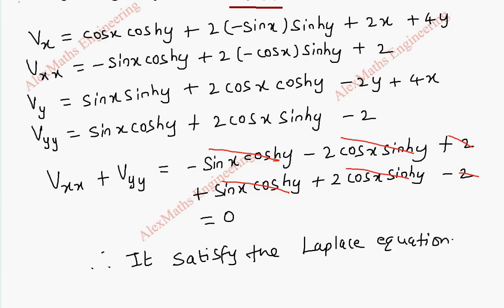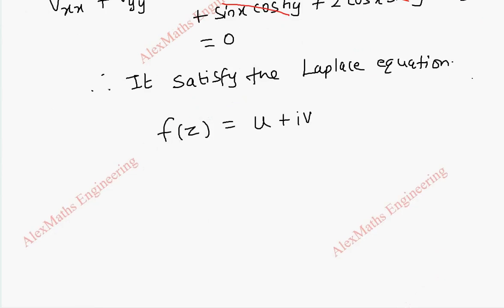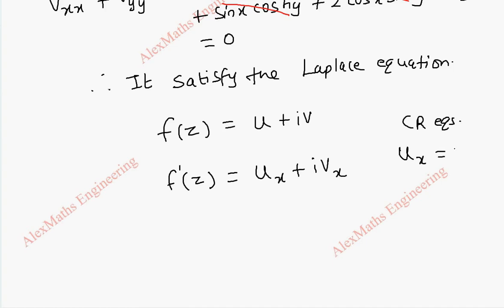So we completed the first part. For finding f of z, let's write f of z is equal to u plus iv and f dash of z becomes ux plus ivx. But from CR equations we get ux equal to vy and uy equal to minus vx. Since we have only v, we keep ivx as it is and for ux we replace it as vy. So f dash of z becomes vy plus ivx.